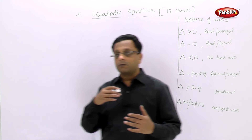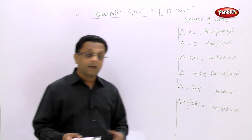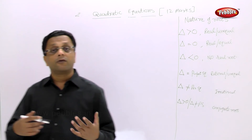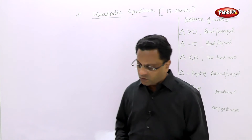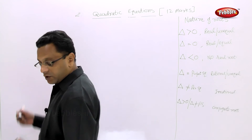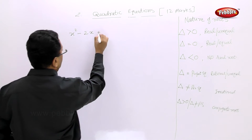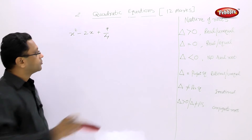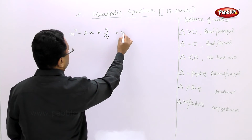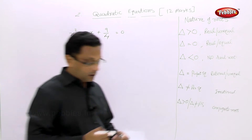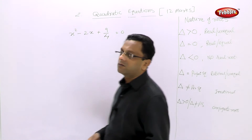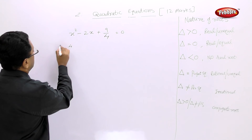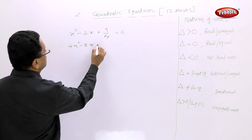They may give the quadratic equation in different forms, so you have to first simplify it and compare with ax² + bx + c = 0, then find a, b, and c. The given equation is x² - 2x + 9/4 = 0. To eliminate the fraction, multiply the equation by 4 to get 4x² - 8x + 9 = 0.